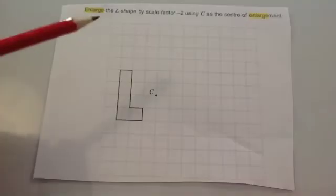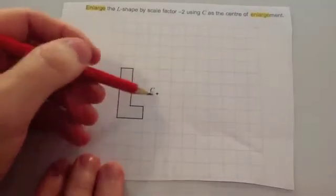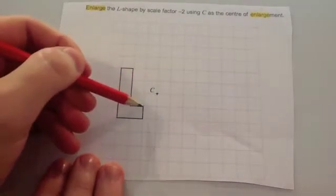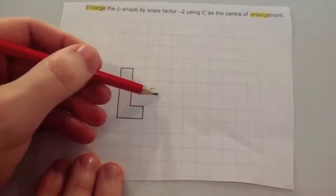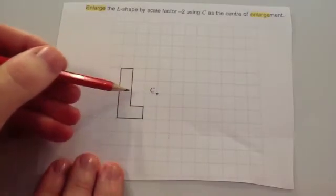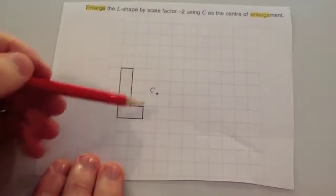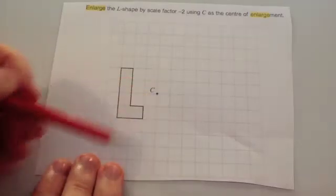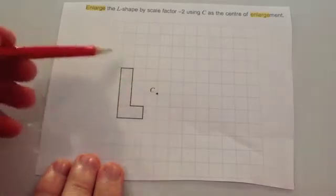Let's consider for a moment what would happen if you enlarged it by a scale factor of 2. If I wanted to enlarge this point by a scale factor of 2, I went 1 to the left and 1 down, so instead I would go 2 to the left and 2 down. In other words, each point becomes twice as far away from the centre of enlargement.